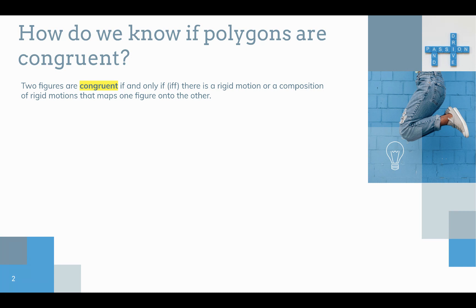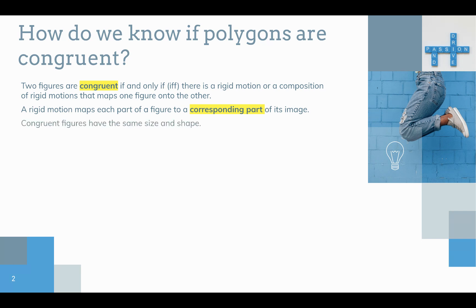You learned in the previous chapter on Transformations that the rigid motions are translations, reflections, and rotations. A rigid motion maps each part of a figure to a corresponding part of its image. Congruent figures have the same size and shape. So these shapes are congruent — there are some rigid motions you could do to map these shapes on top of each other.